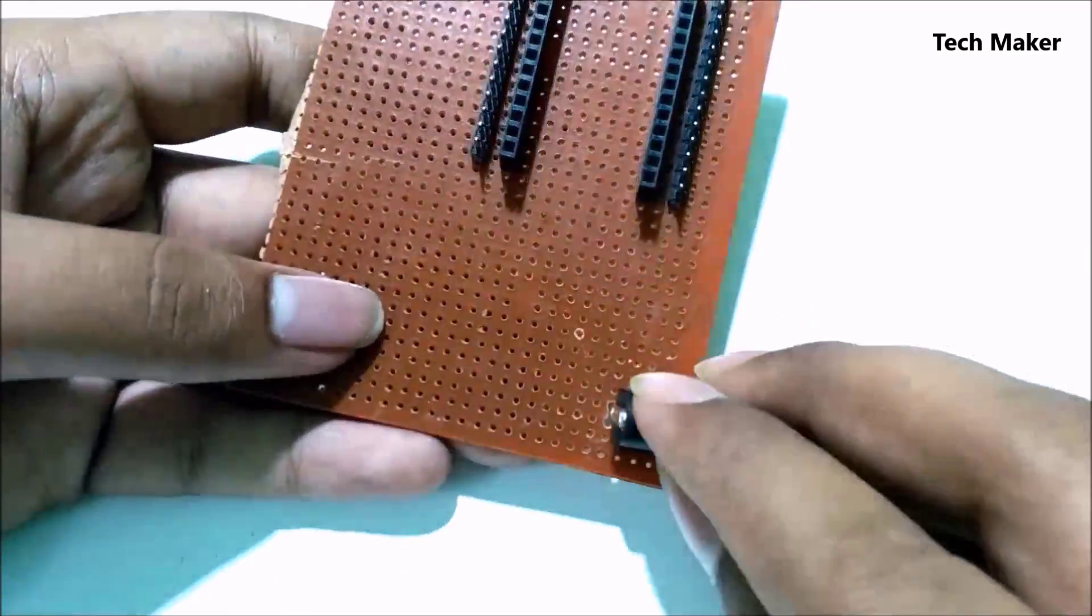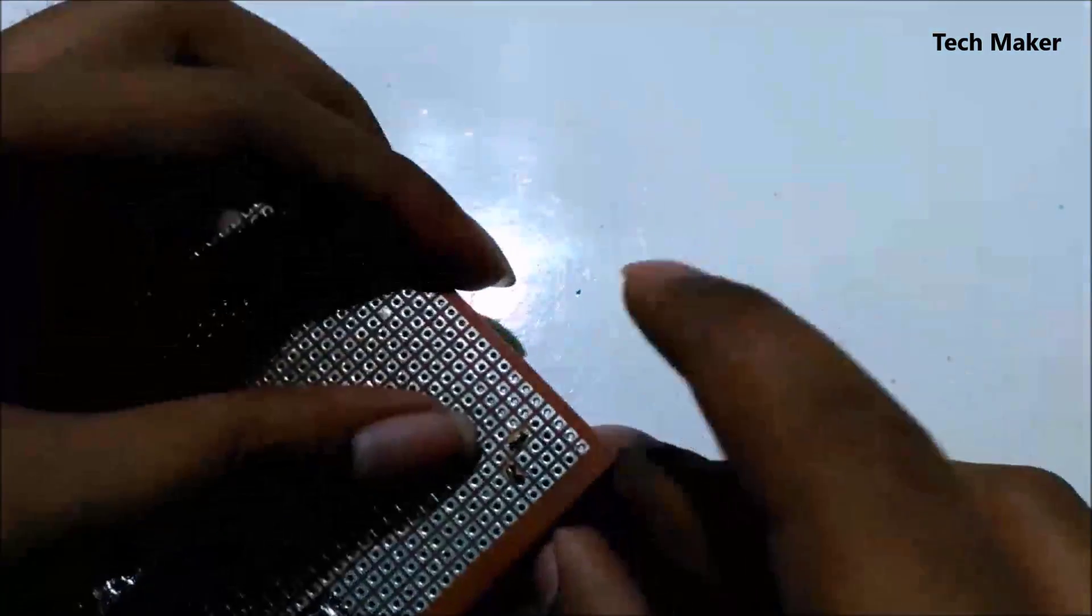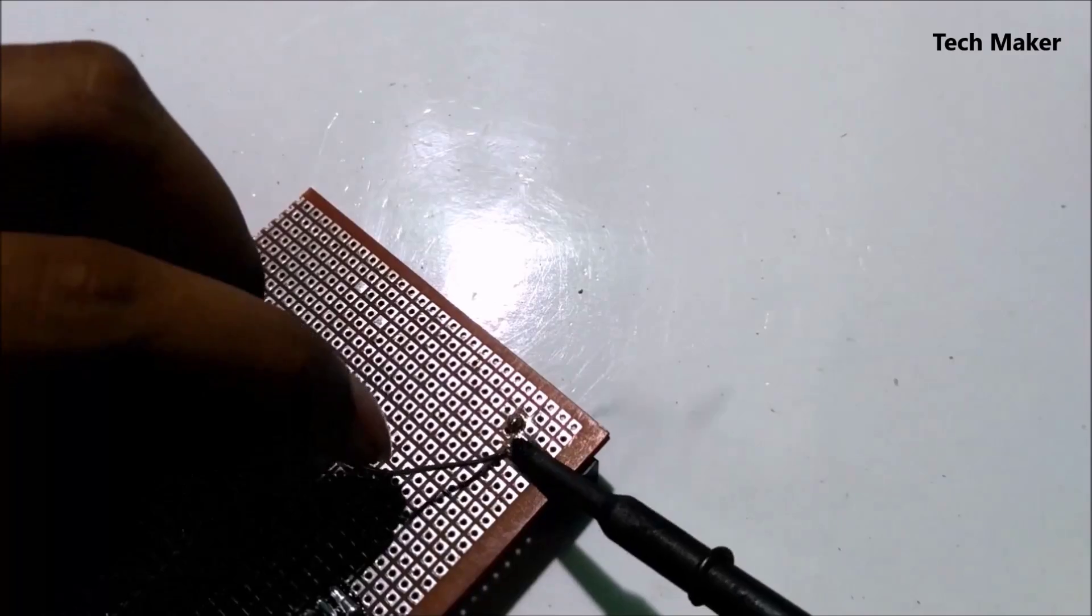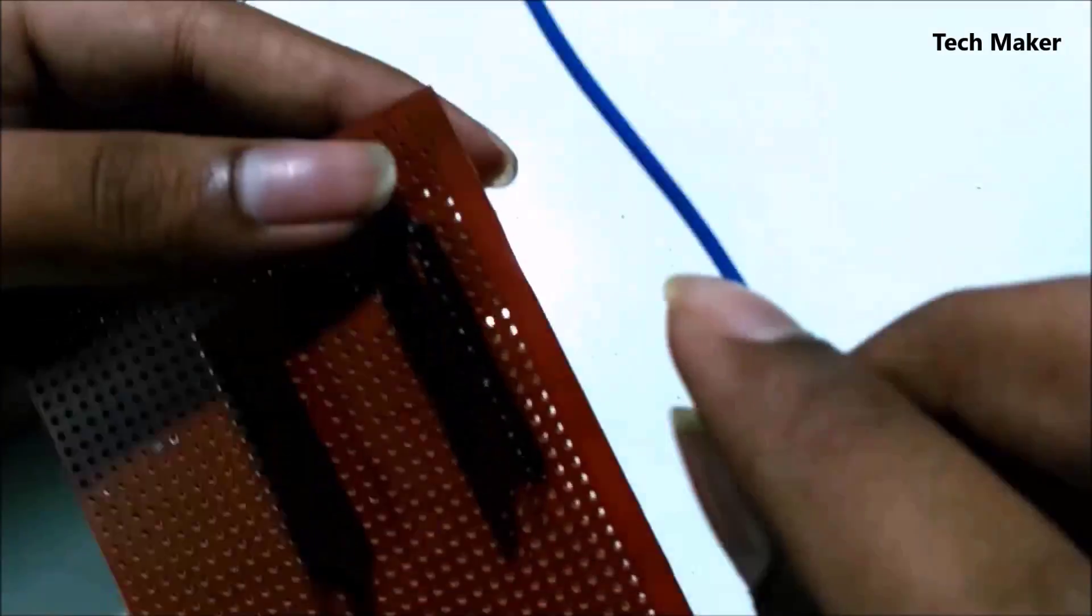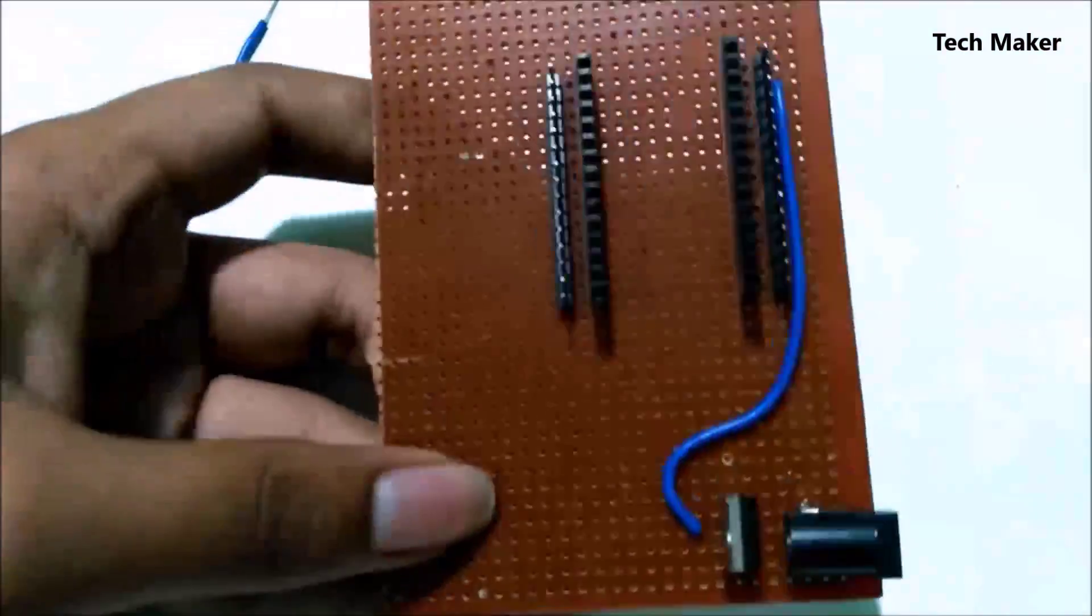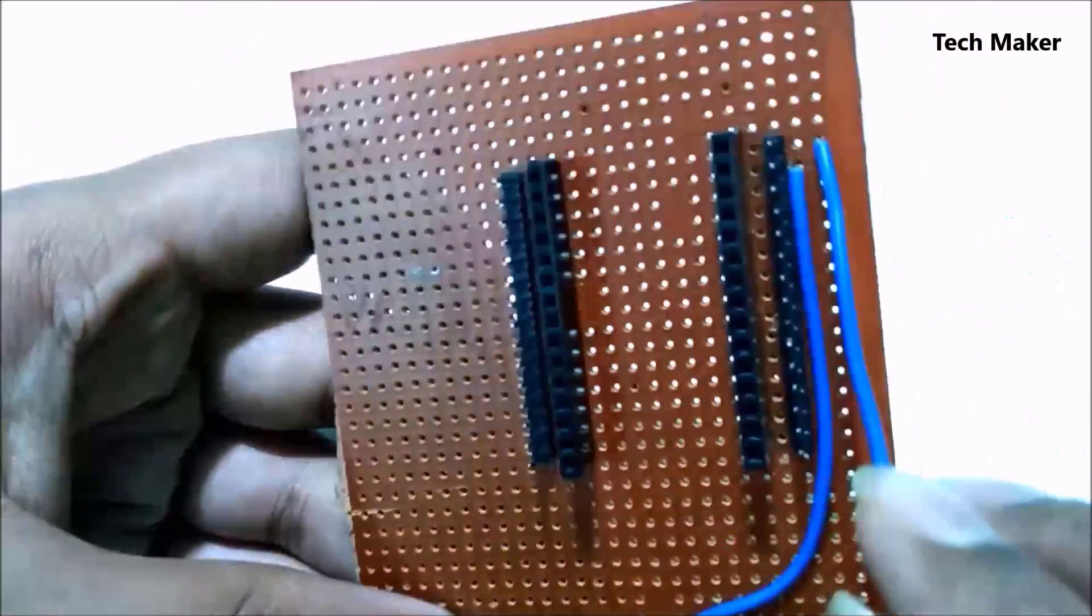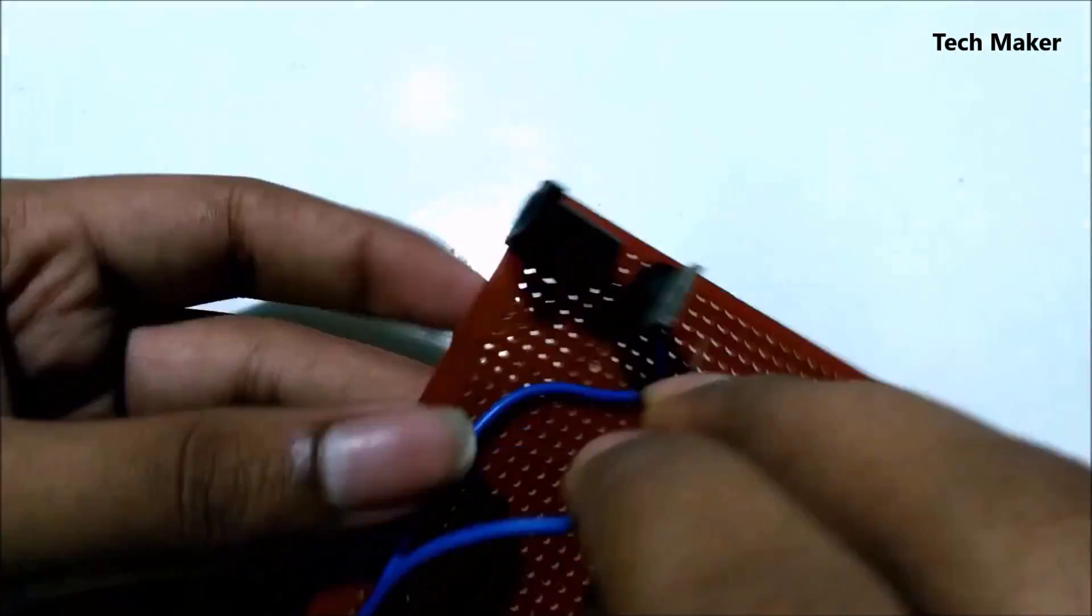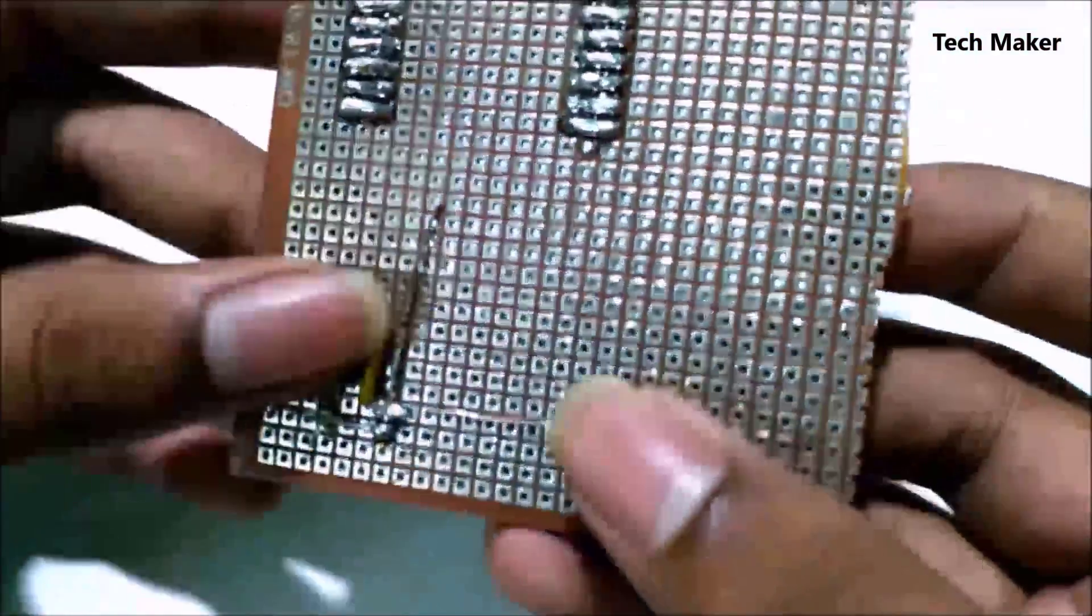This is the female DC jack; it is to be inserted in the perf board and soldered. And you have to insert an IC 7805 5-volt voltage regulator. This positive 5 volts is connected to the right side 5-volt pin of the ESP8266 module and ground to the ground. After interconnecting, it looks like this.